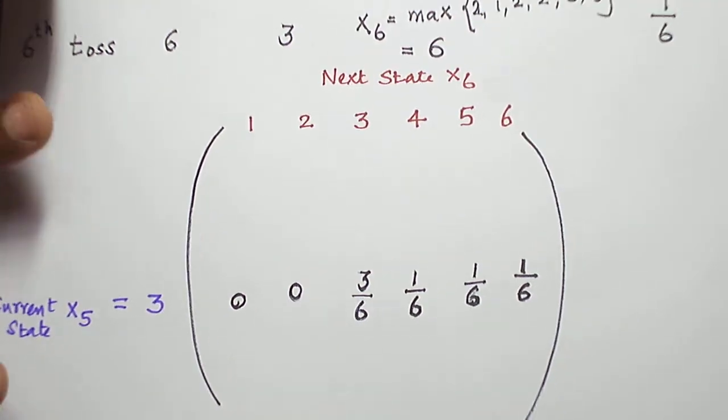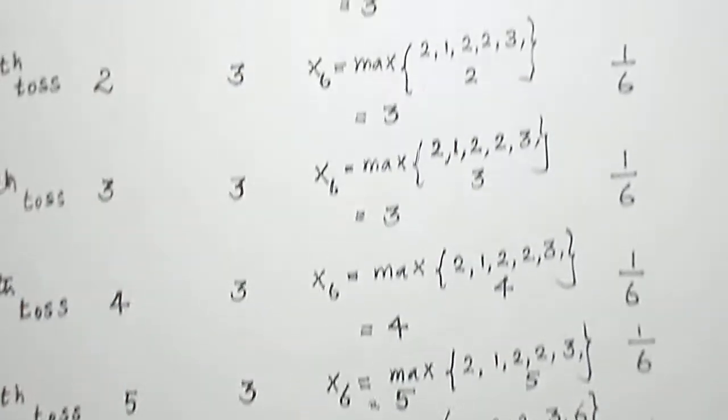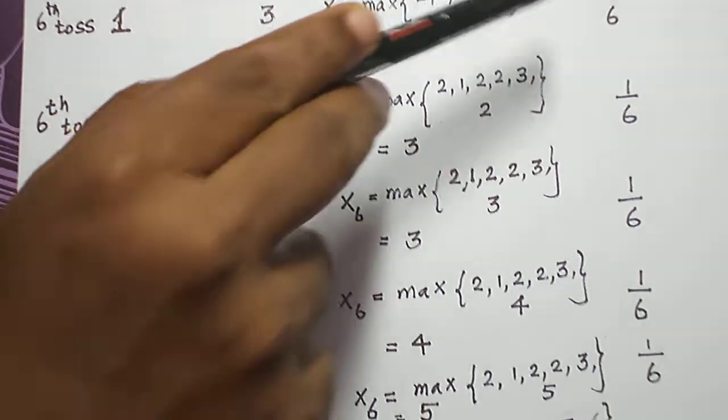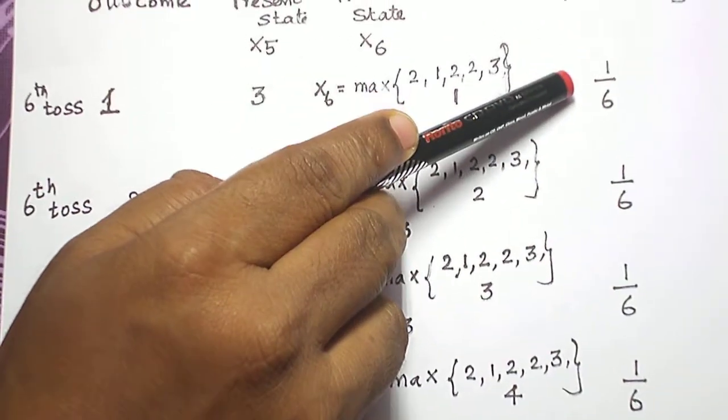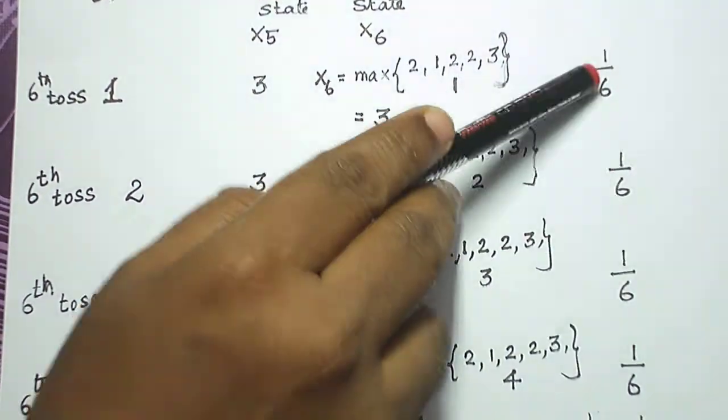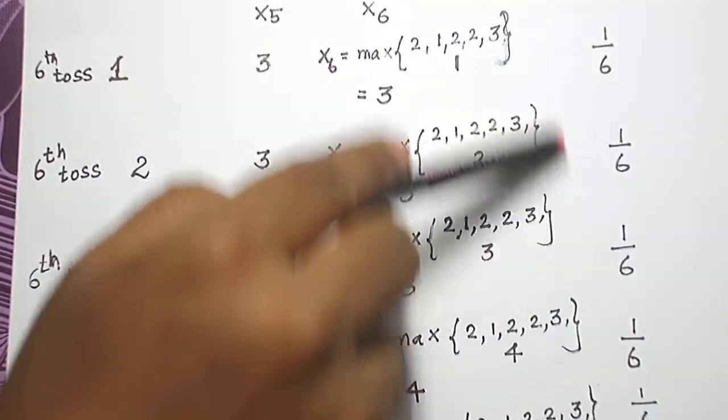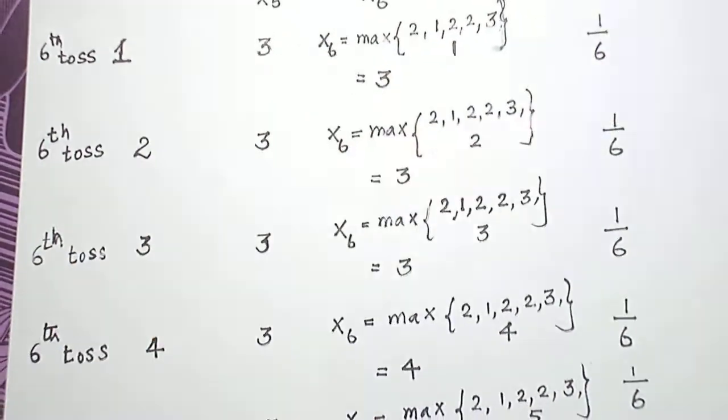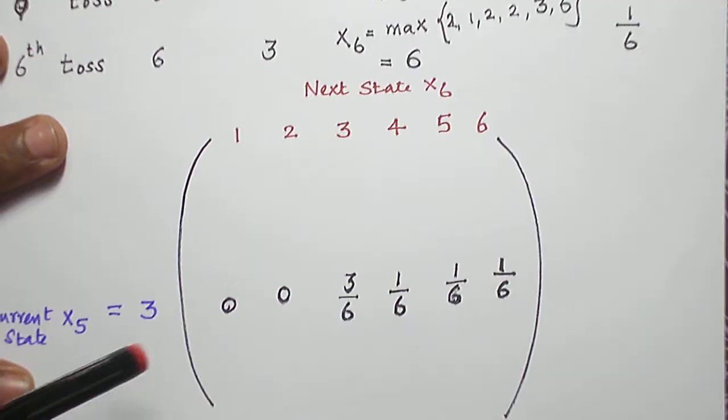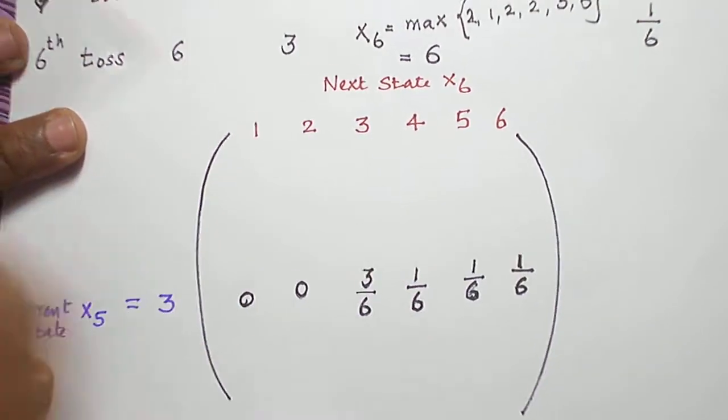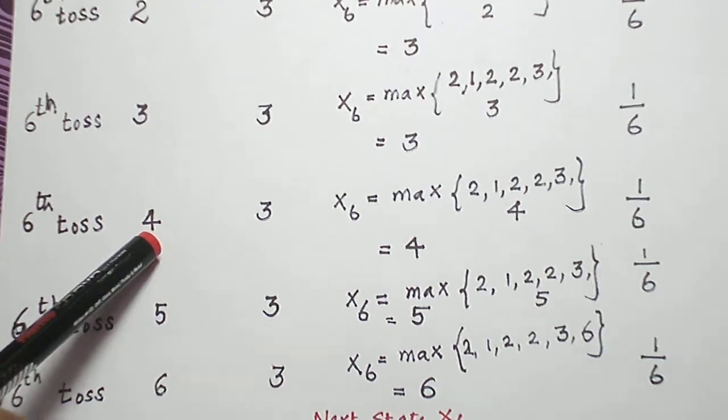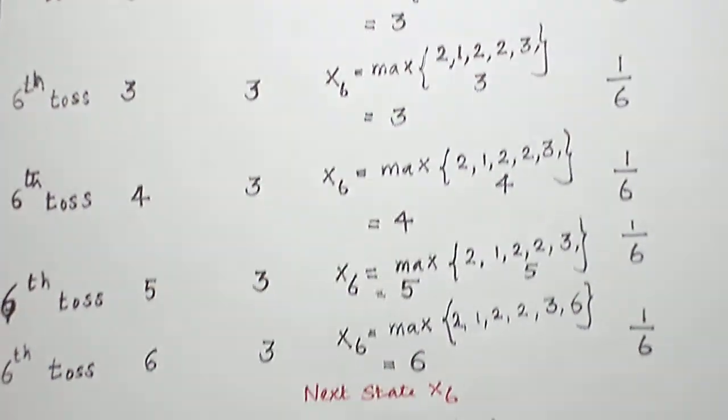It may remain in state 3 itself if the outcomes are either 1 or 2 or 3. Probability of getting either 1 or 2 or 3 is 1 by 6. So I am going to add these 3 probabilities. Adding these 3 probabilities, I will get 3 by 6. Now, state 3 to 4 will happen only if the outcome is 4. Probability of getting 4 is 1 by 6.